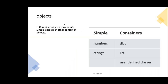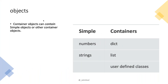Objects in Python can be of two types: simple objects and container objects. Simple objects are numbers and strings. Containers could be dictionaries, lists, or user-defined classes. Containers can hold simple objects, other container objects, strings, integers, booleans, sub-lists, or other dictionaries.